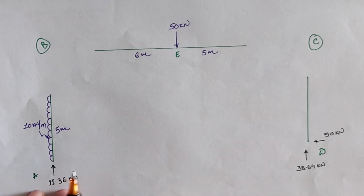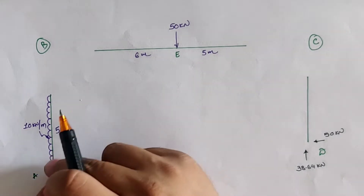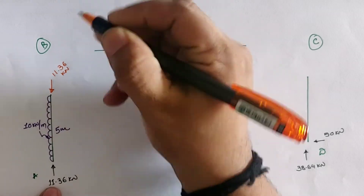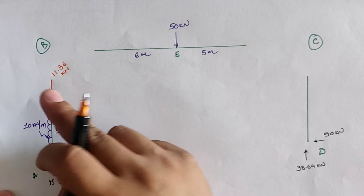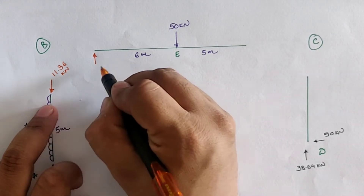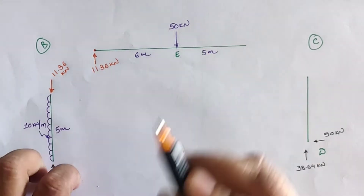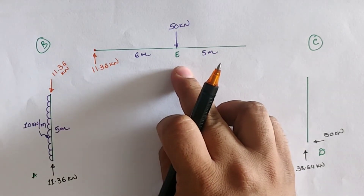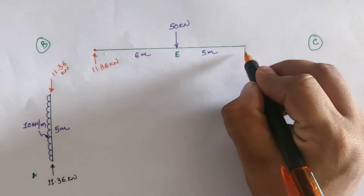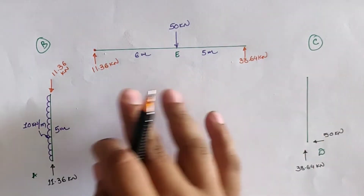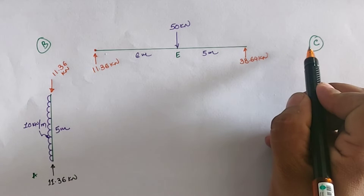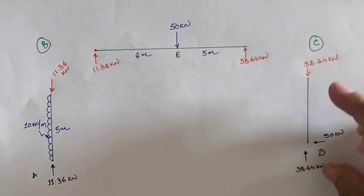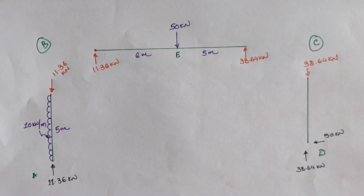Observing the vertical load at A: RA = 11.36 kN due to the roller support. For neutralization of member AB, we apply an opposite load of 11.36 kN at B. Since in the actual frame there is no point load at B, we apply a vertical upward load of 11.36 kN. For member BC, the total downward load is 11.36 + 50 = 61.36, so we apply an upward load of 38.64 kN at C. At C in the actual frame, no point load exists, so the opposite load of 38.64 kN is applied.